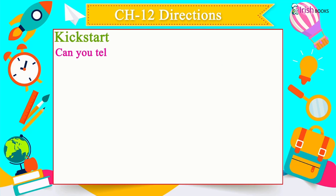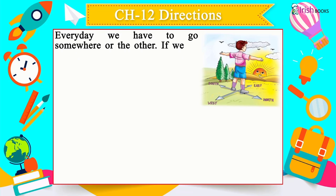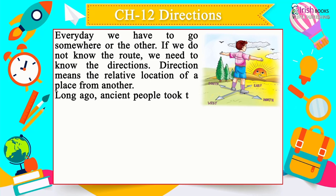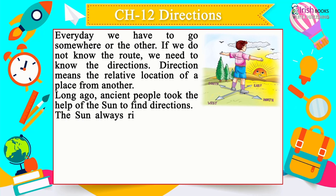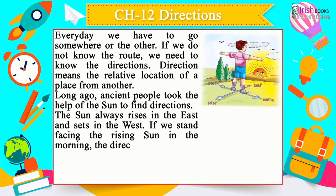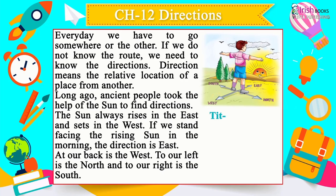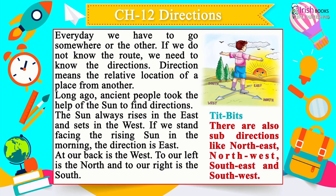Chapter 12: Directions. Every day we have to go somewhere. If we do not know the route, we need to know the directions. Direction means the relative location of a place from another. Long ago, ancient people took the help of the sun to find directions — the sun always rises in the east and sets in the west. If we stand facing the rising sun, the direction is east, at our back is west, to our left is north, and to our right is south. There are also sub-directions like north-east, north-west, south-east and south-west.